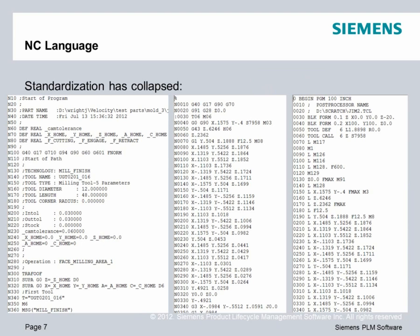However, today standardization has collapsed. There are very few G-codes that will pass from one machine to another, and there's so much other code that has changed that you really couldn't take an NC program from one machine and move it to another. On the left-hand side, we have NC code for a Siemens control. In the middle, we have NC code for a Fanuc 6M control. And on the far right-hand side, we have NC code for a Heidenhain control. So control manufacturers have responded to customers' needs in different ways, and as a result, we don't have the standardization that we once had.